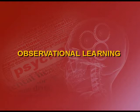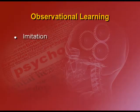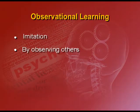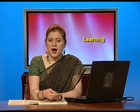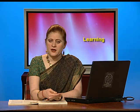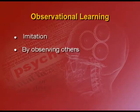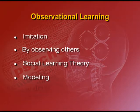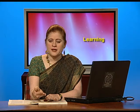Observational learning. This form of learning was known as imitation earlier. As the name specifies, it is the learning gained by observing others. Most human beings understand and get acquainted with their social processes through observation. Therefore, it is also known as social learning theory. Modeling is a technique used during observational learning, where people look at role models and try to emulate and reciprocate the same behaviors as those perceived role models.